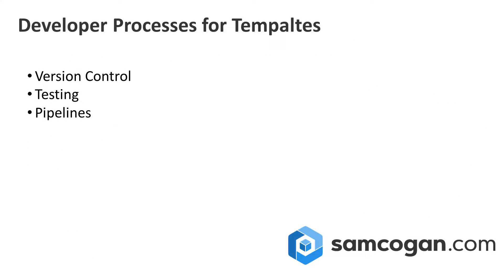This week we're going to have a look at version control, and then we're going to move on next week to testing. There's probably going to be a couple of episodes on that because it's a fairly complex topic. And then after that we're going to have a look at using pipelines and automation to deploy your templates. Now these are all tools that developers have been using for a long time, but if you're coming from the IT pro side of things with creating Arm Templates, these are all possibly going to be pretty new, pretty foreign, and possibly pretty scary.